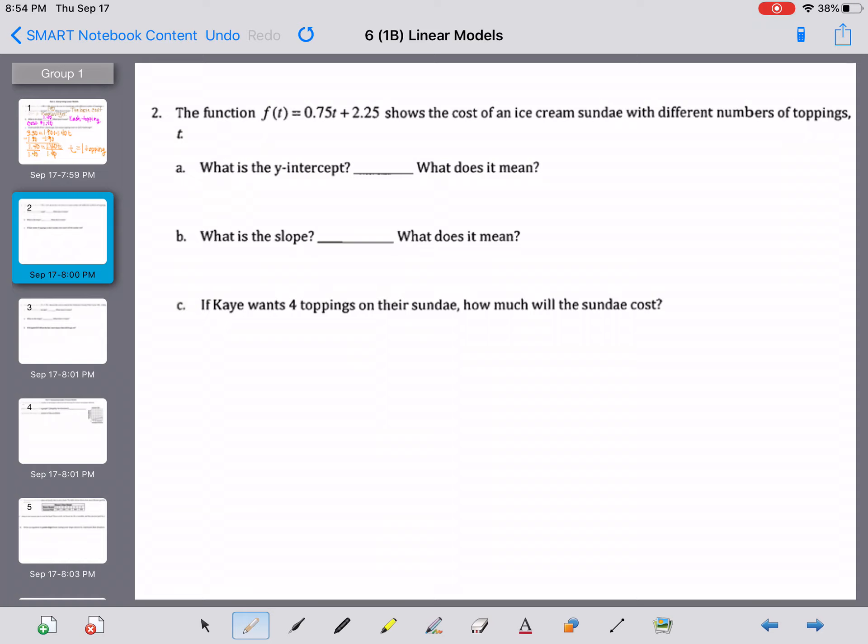The first question says, what is the y-intercept? When we're talking about the y-intercept, we're looking for the value in our equation that does not have a variable. In this case, it's 2.25. And what does that mean? It's the cost of the sundae with no toppings.